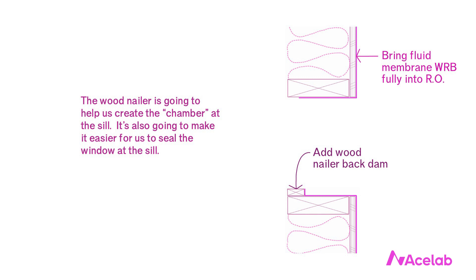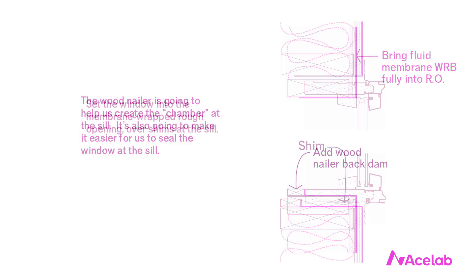First, we add a small wood nailer as a back dam — not mandatory but a good idea. Next, we bring the fluid membrane into the rough opening on all four sides. This step is about protecting the wall, not the window, since we've built the wall out of moisture-sensitive materials. The most vulnerable part is the sill — the building code only requires protecting the sill, but I recommend protecting the entire opening, particularly the cut edges of the sheathing.